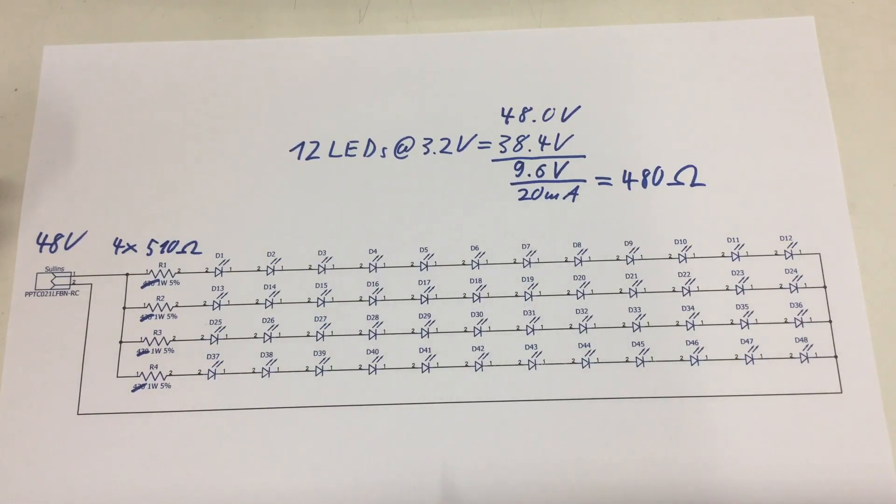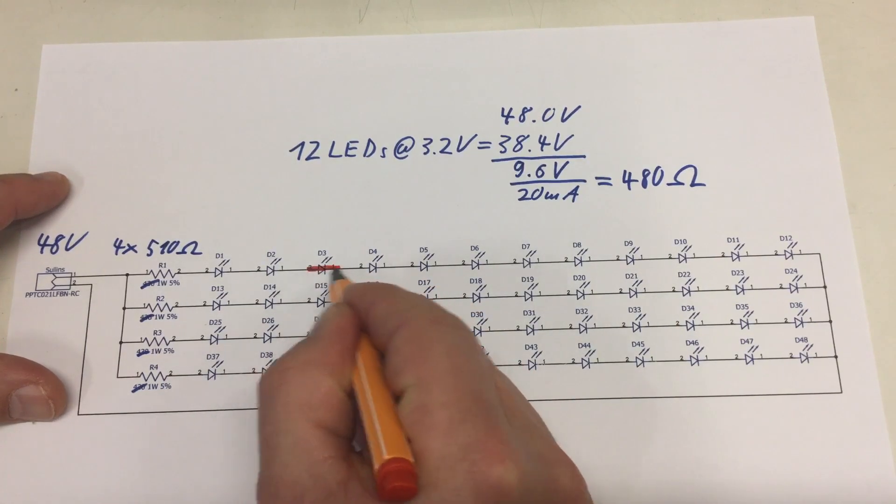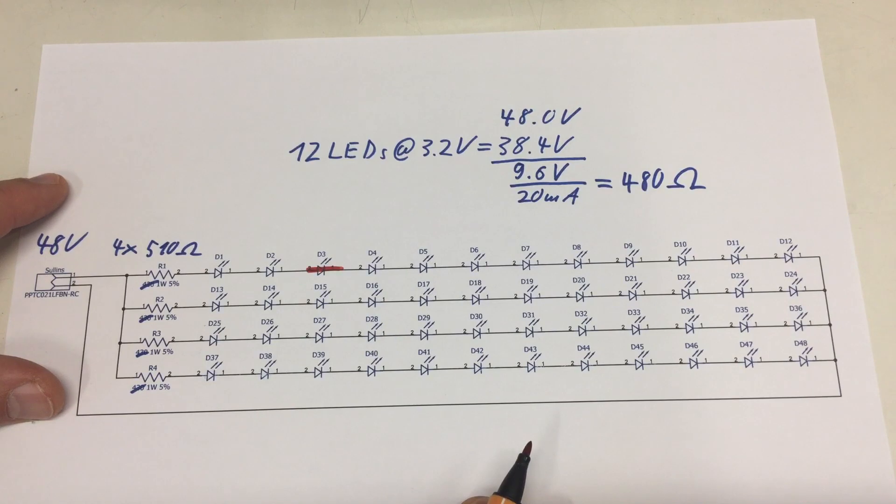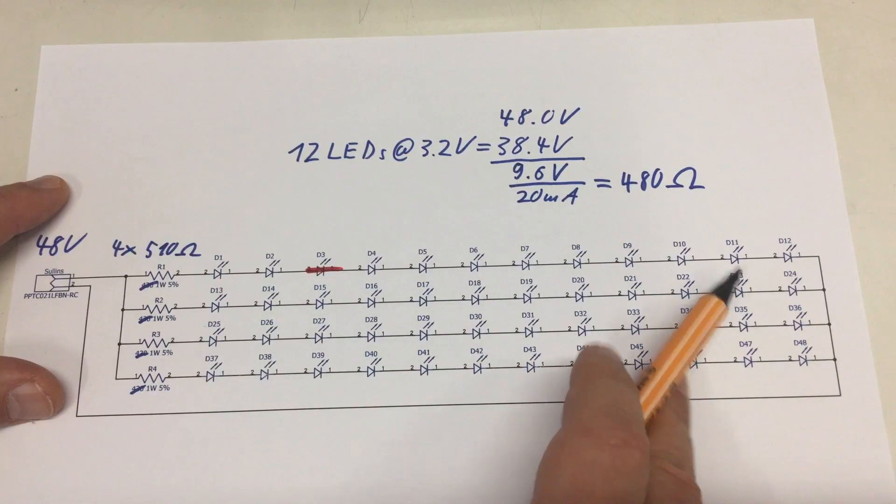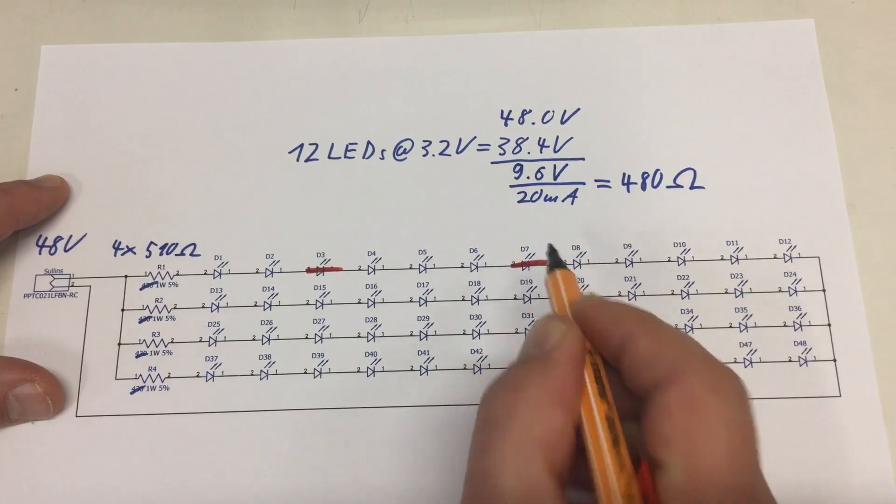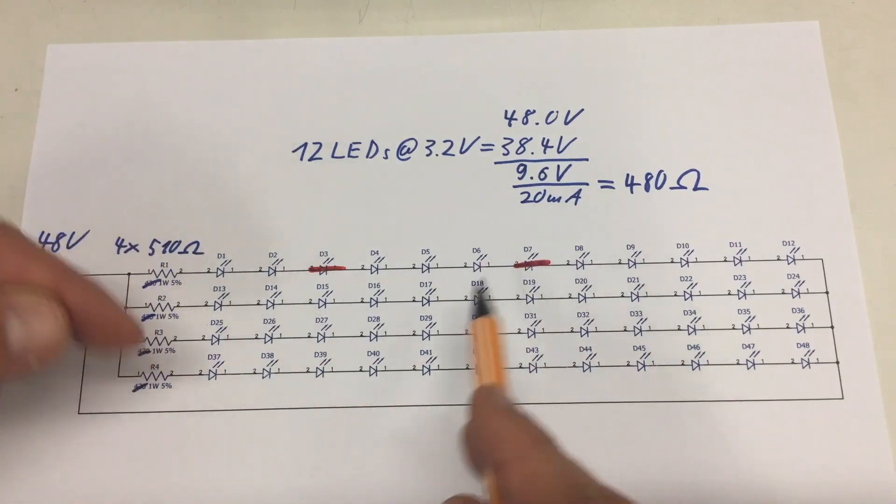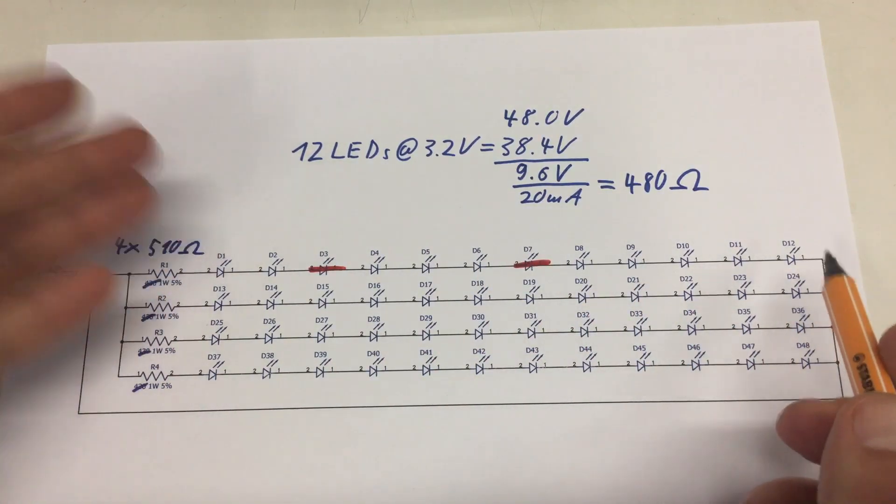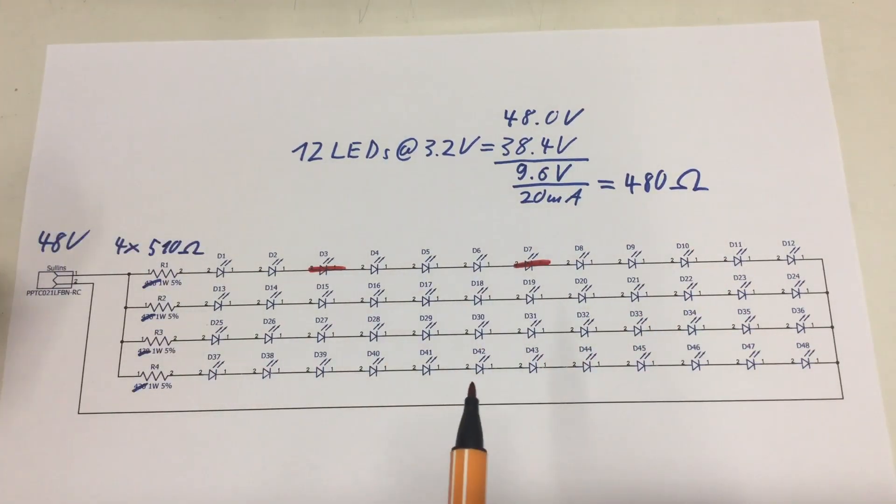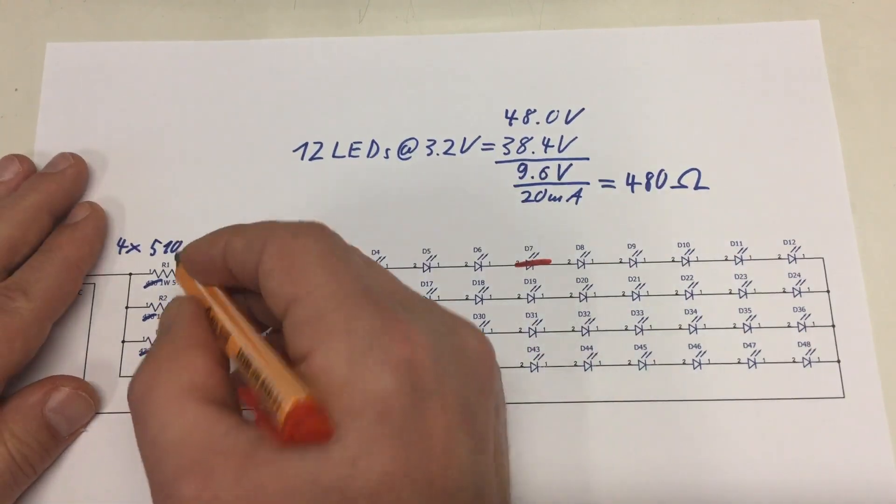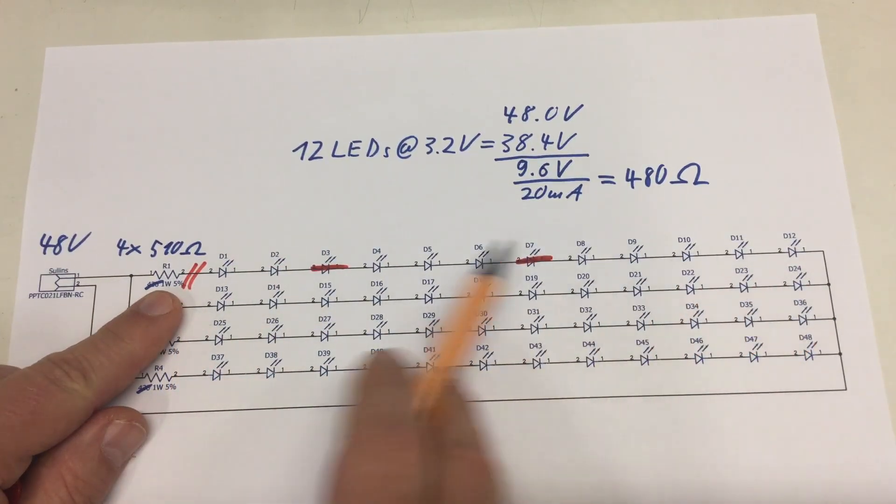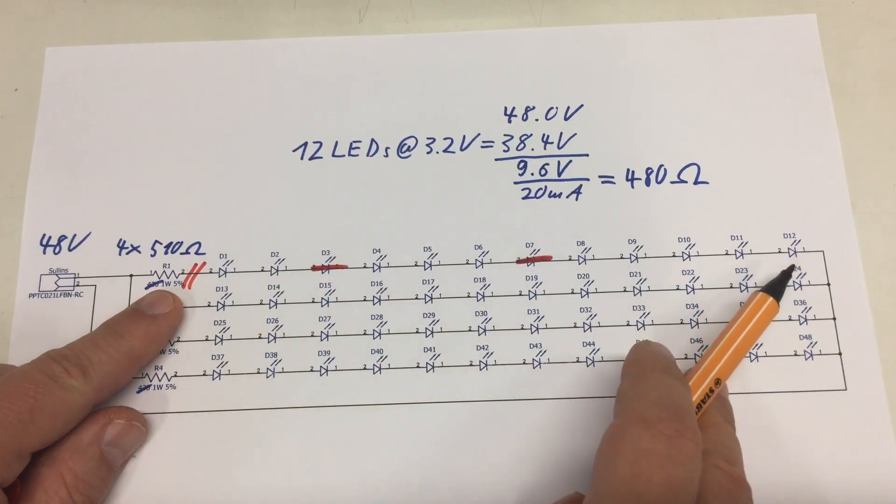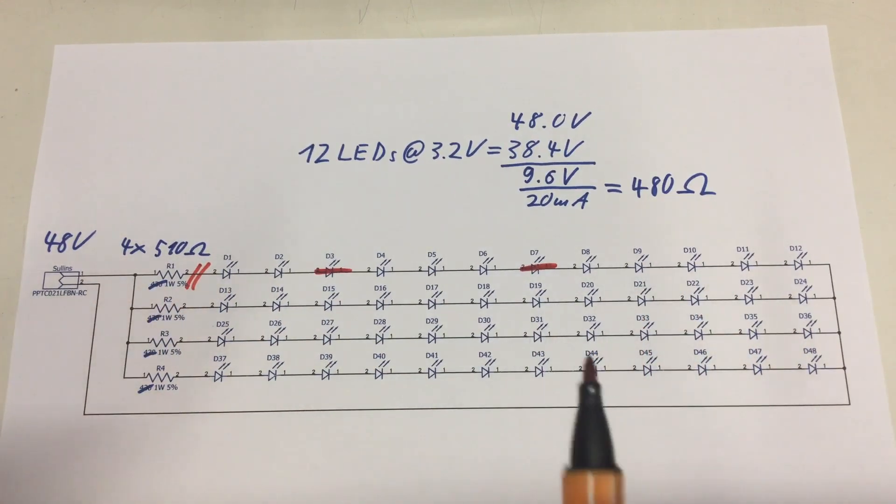The problem is these LEDs have a failure mode where they create a short, and that means the total current is increasing until the next LED gives up and makes a short. The current is even more increasing because of less voltage drop. My solution was simply to cut off the defect line of LEDs here on the board, but that's of course not a solution.